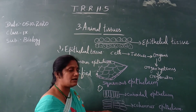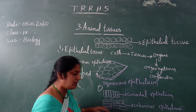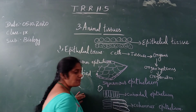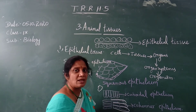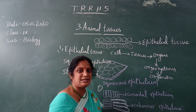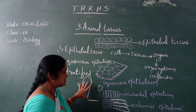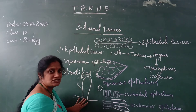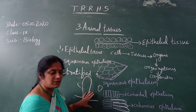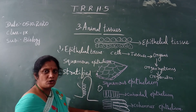Another type is called columnar epithelial tissue. These cells are very long and cylindrical in shape. This type of tissue can be observed in the intestinal villi and the kidneys, where absorption takes place. The small intestinal villi — those finger-like structures — are lined with this columnar epithelium.